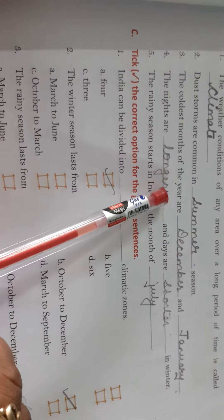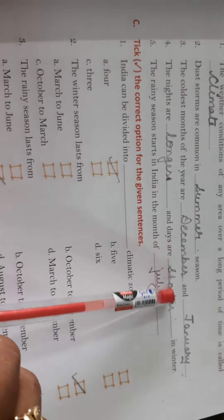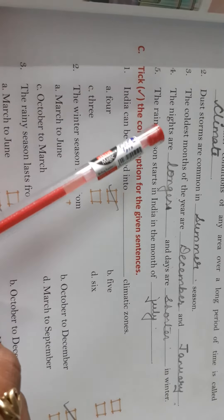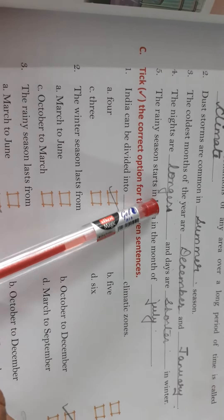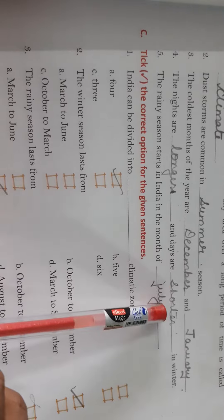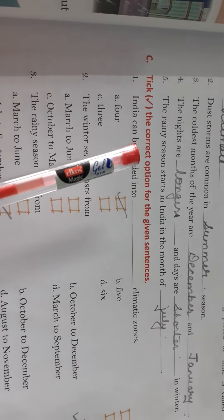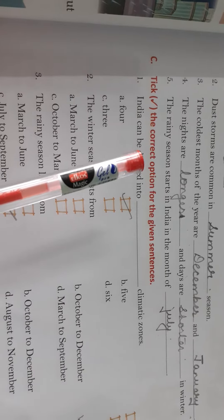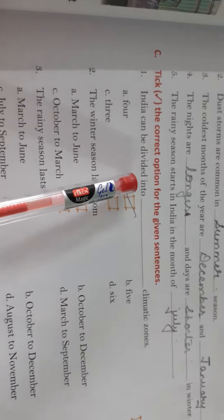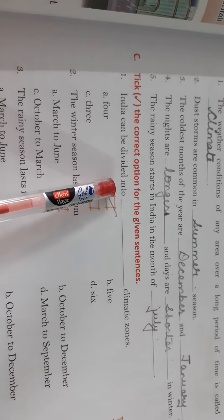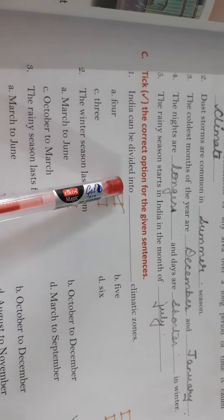The coldest month of the year are December and January. The nights are longer and days are shorter in winter. The rainy season starts in India in the month of July.